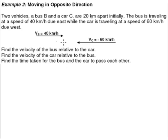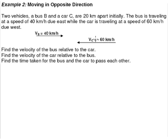The bus is traveling at a speed of 40 kilometers per hour due east, as illustrated by this diagram. And the car is traveling at a speed of 60 kilometers per hour due west, in the opposite direction. Therefore, the velocity will be negative 60 kilometers per hour because it is traveling in the opposite direction.